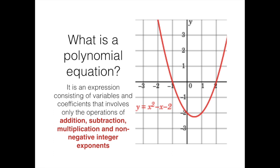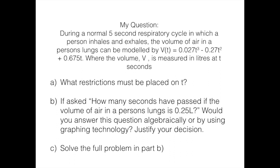Now to my question. I'll read it once through from start to finish. During a normal 5 second respiratory cycle in which a person inhales and exhales, the volume of air in a person's lungs can be modeled by the following, where the volume V is measured in liters at T seconds.